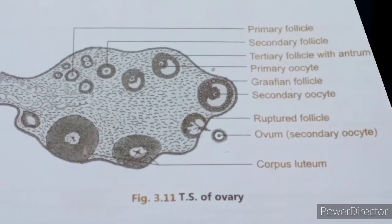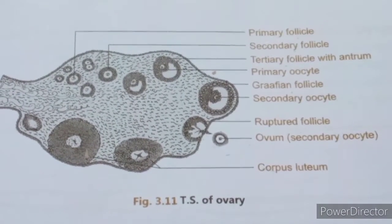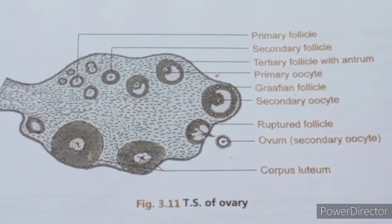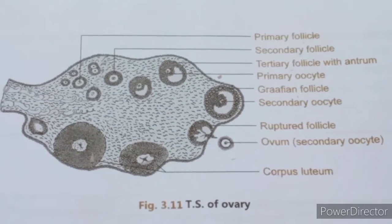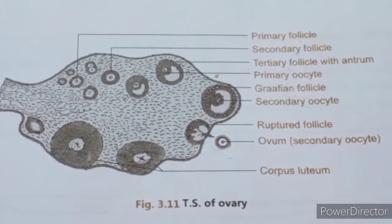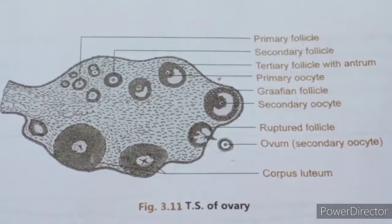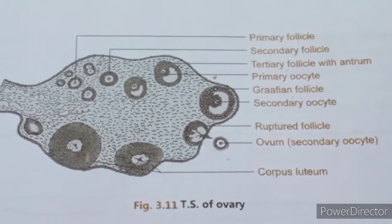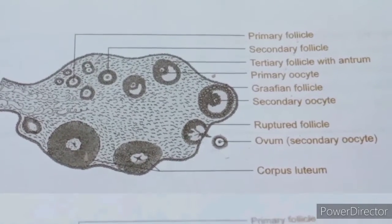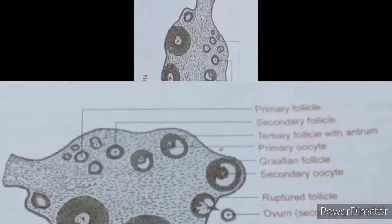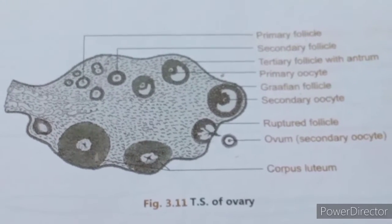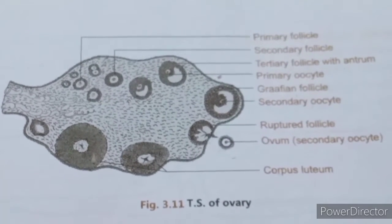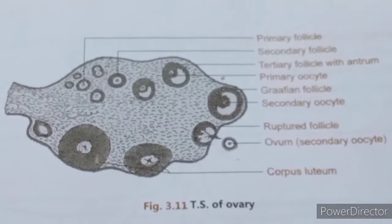In females, the first puberty or menstruation is called menarche. At the age of 45 to 50, the menstrual cycle gets stopped — this stage is called menopause. After menopause, the menstrual cycle stops and the ovum will no longer be released.